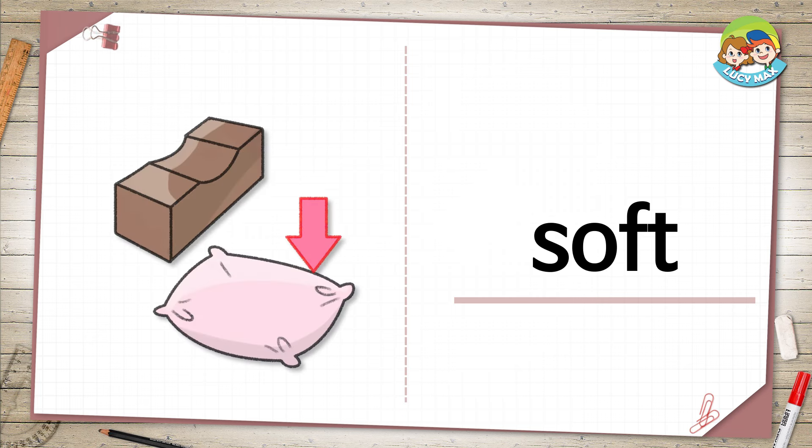Soft. When we touch something soft, it feels nice on our hands. It's not hard. The picture shows two pillows. One is made of wood. It is hard. The arrow points to a soft pillow. It is made of cotton and cloth.